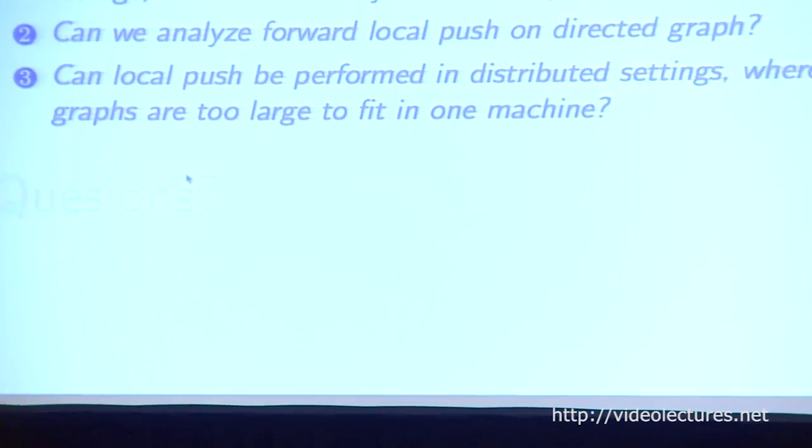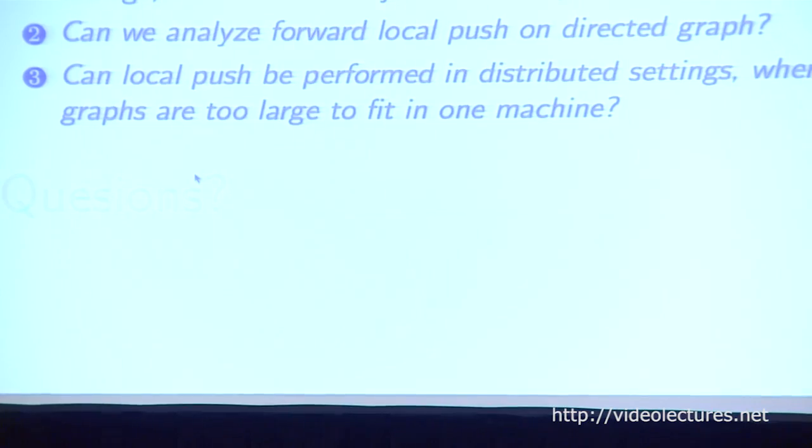To summarize, in this work we proposed a new method for keeping personalized PageRank values updated on a changing graph. Compared to the Monte Carlo method, it saves redundant storage, as reflected in our analysis and simulations. There are two interesting open questions: first, can we analyze the forward local push algorithm on directed graphs? And second, can local push be performed in distributed settings when graphs are too large to fit in one machine?